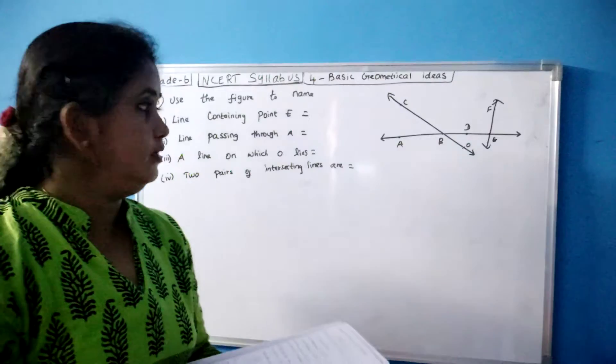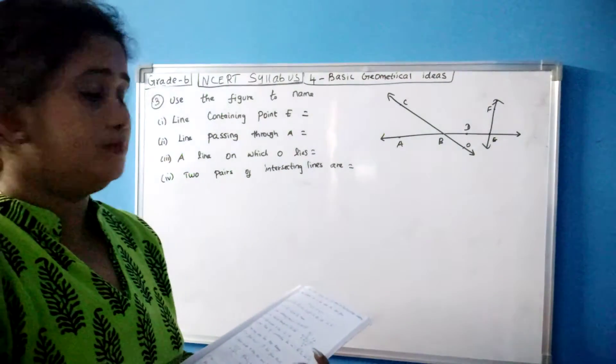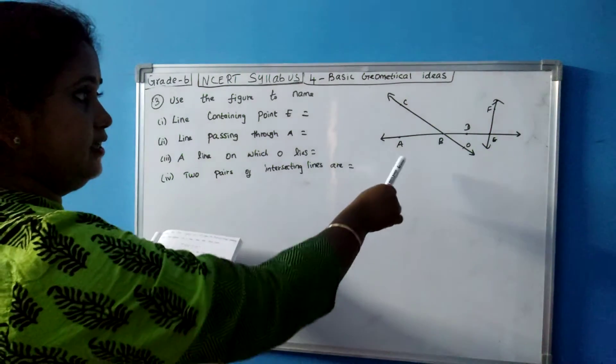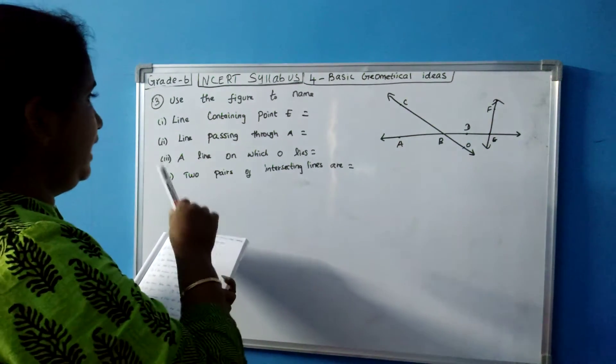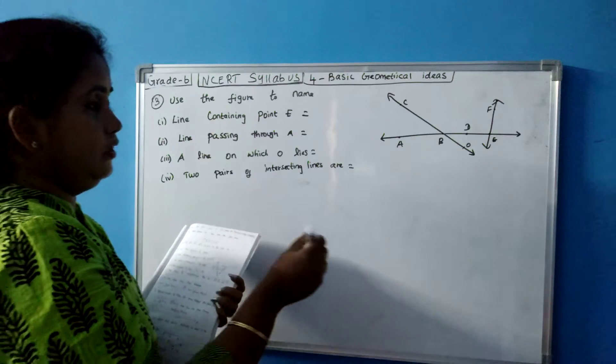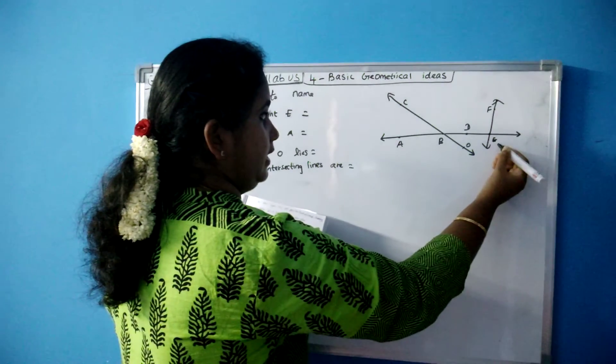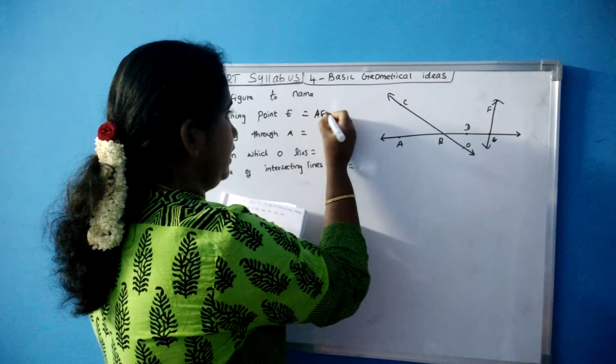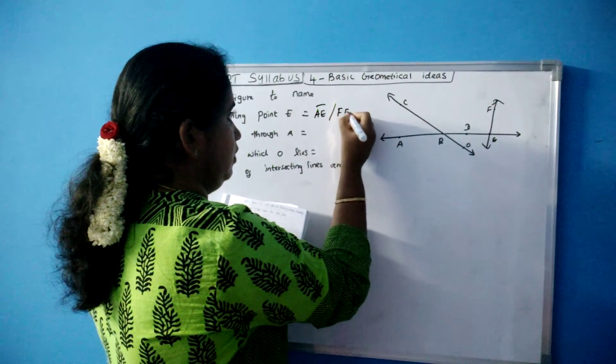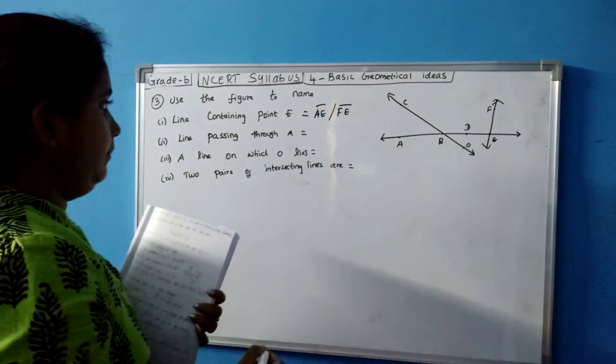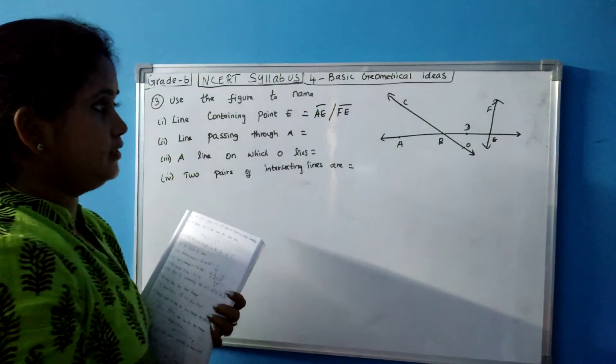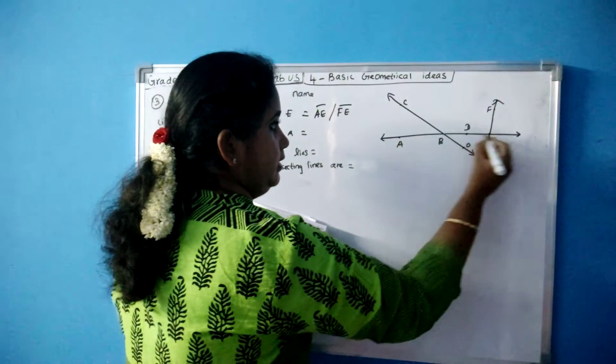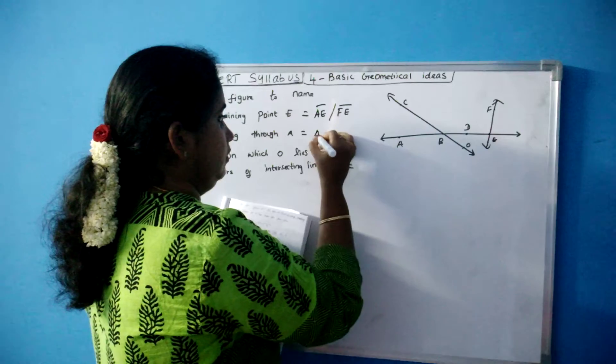So this is your next question. I hope the question is visible. Use the figure to name line containing. So this is the given figure. Line containing point E. So where does the point E lie? It is lying in the line AE and FE. So AE or FE.